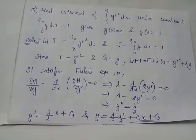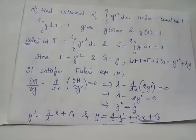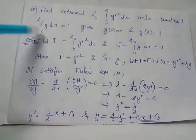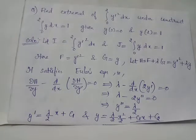Find the extremal for the integral from 0 to 2 of y-dash squared dx under the constraint integral from 0 to 2 of y dx equals 1, given the boundary conditions y(0) = 0 and y(2) = 1. We denote the functional to extremize as I and the constraint functional as J, so I = ∫₀² y′² dx and J = ∫₀² y dx = 1.